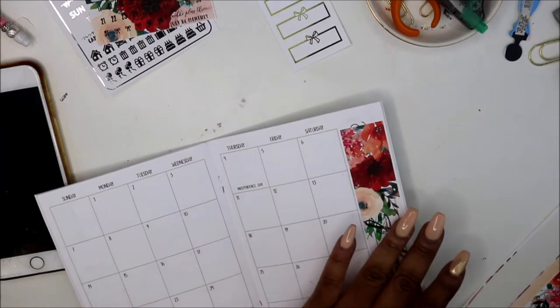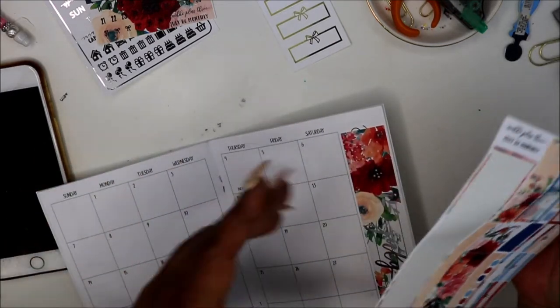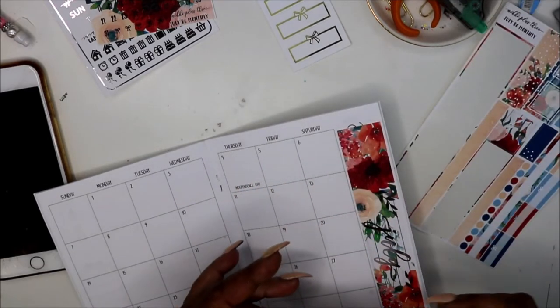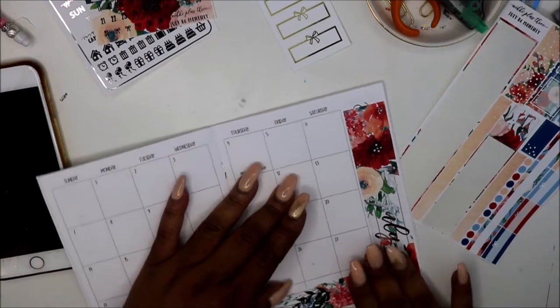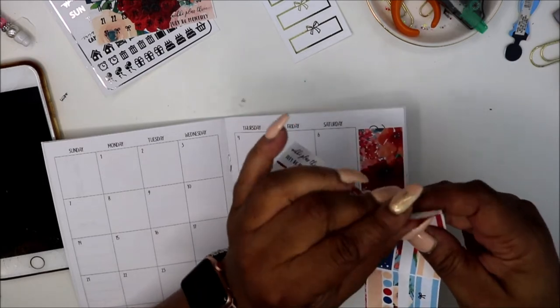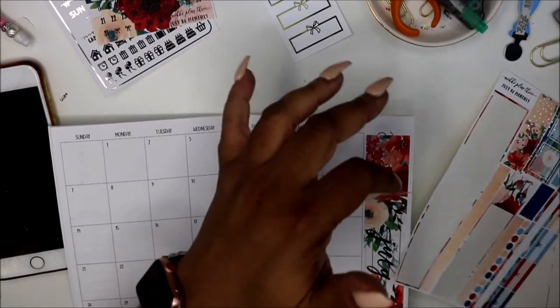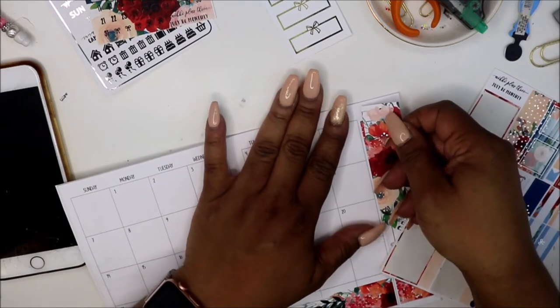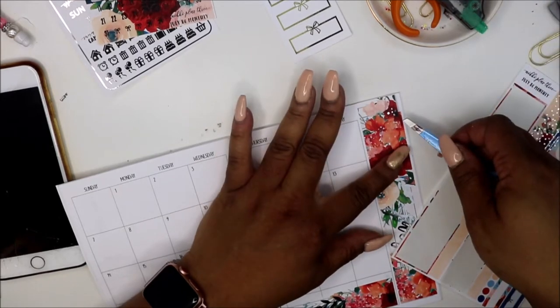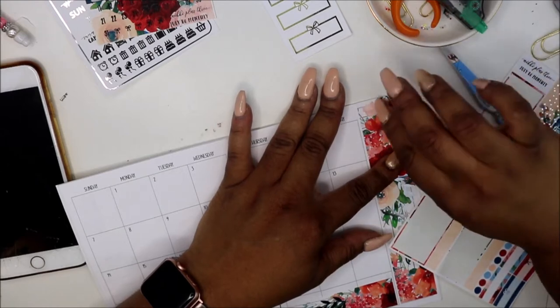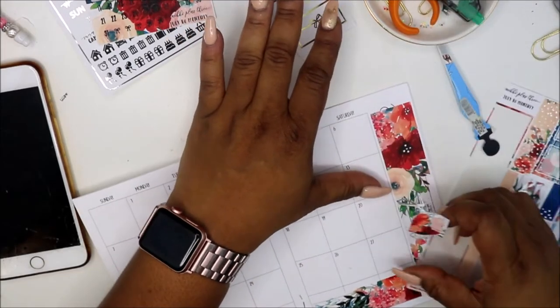I think this goes down here and then something goes across that top part. This is like maybe my second time using her kit, and I still quite haven't figured it out. So this goes here at the bottom, I'm going to assume here, and then I believe this goes in one of those boxes.